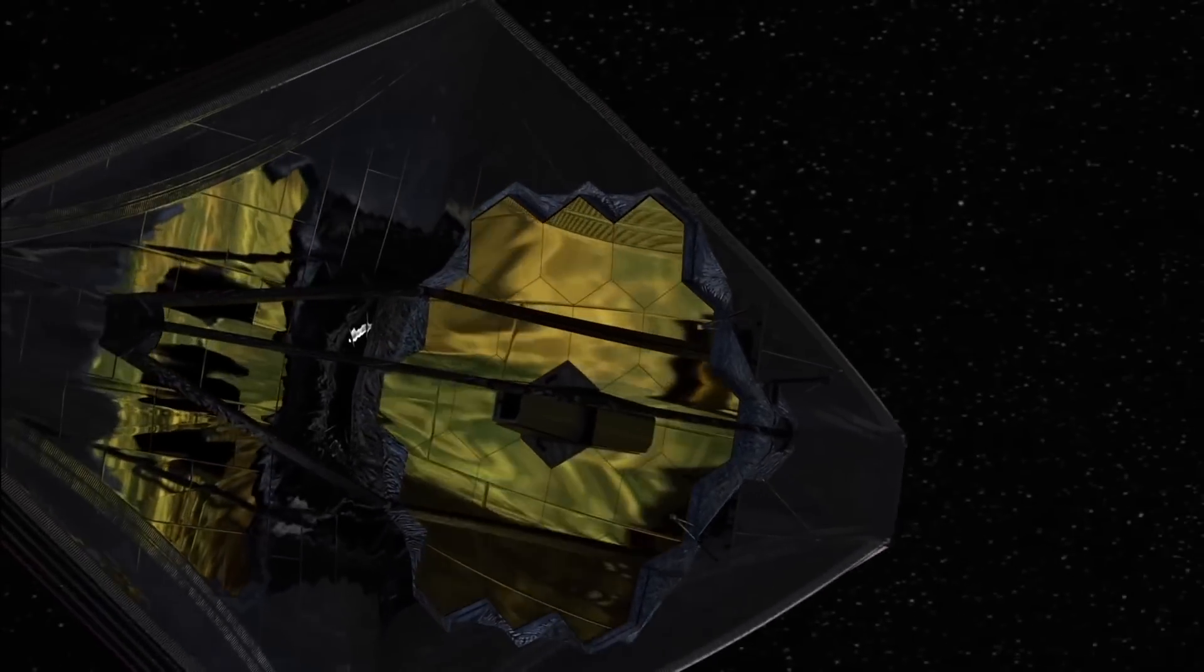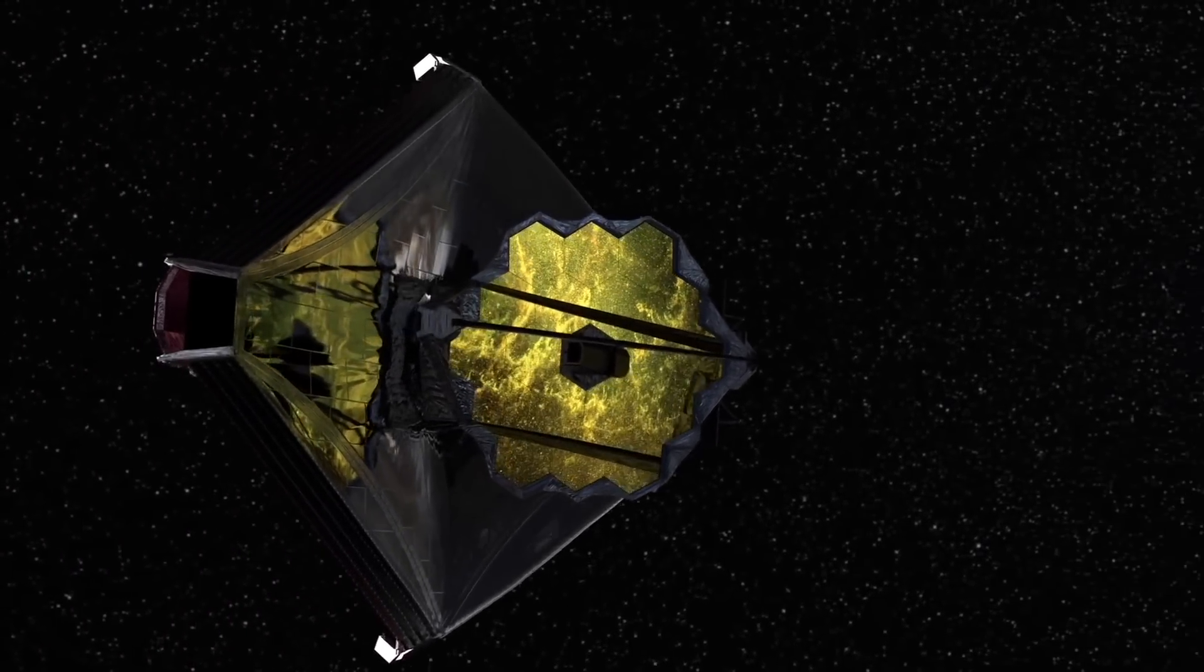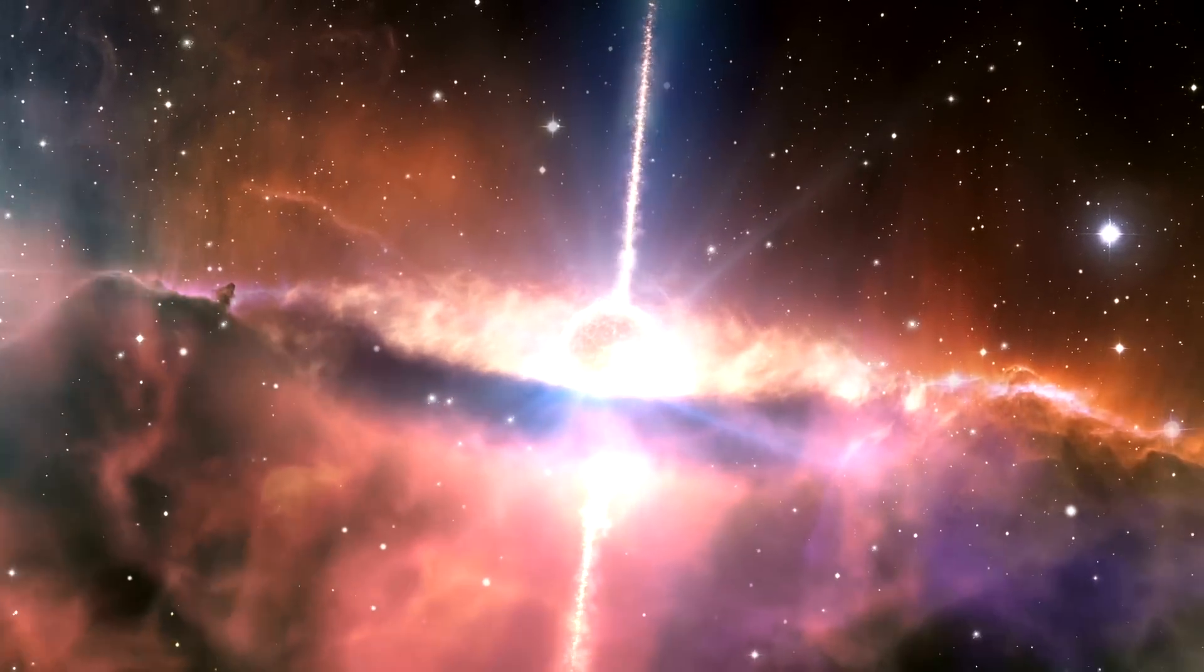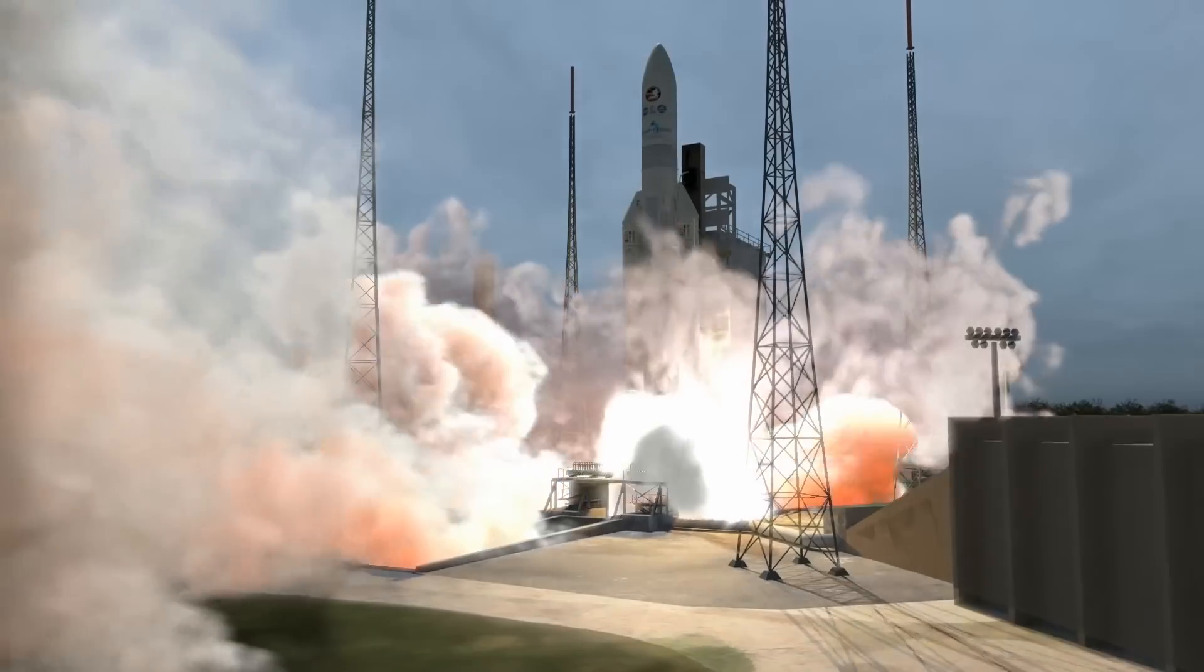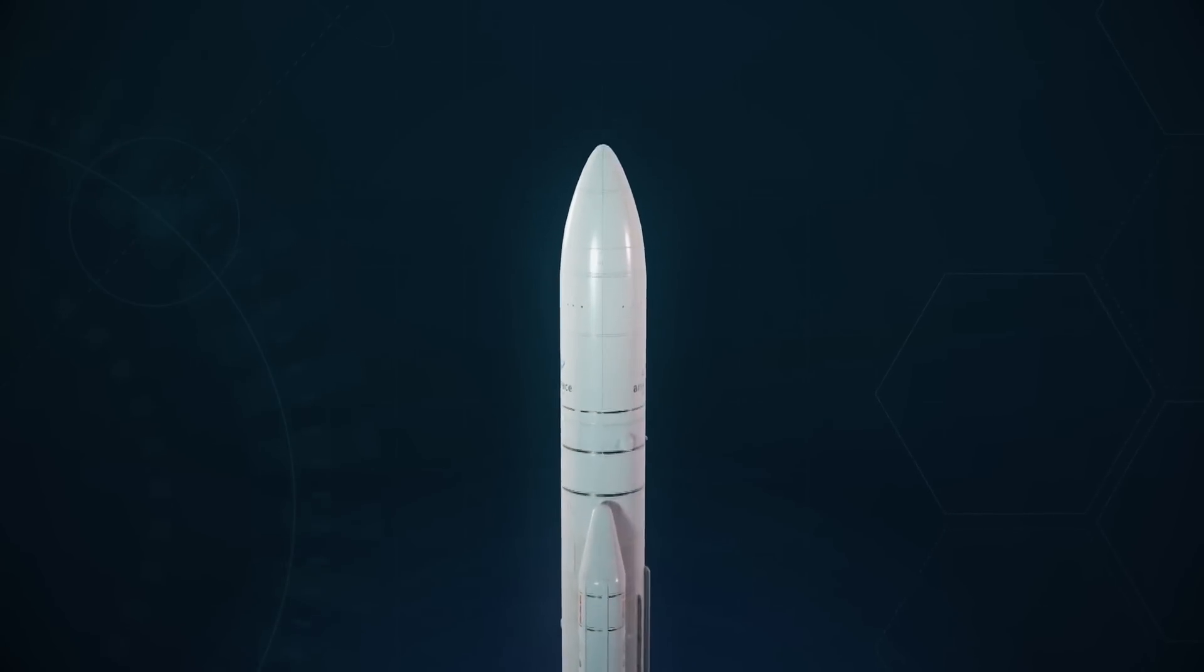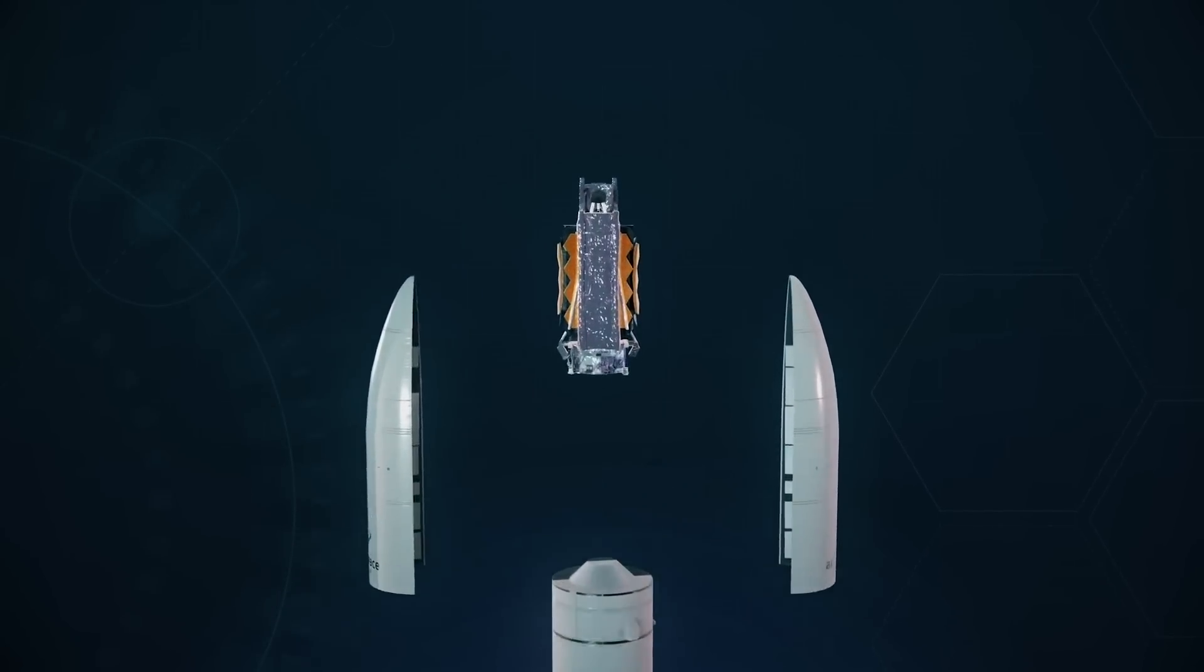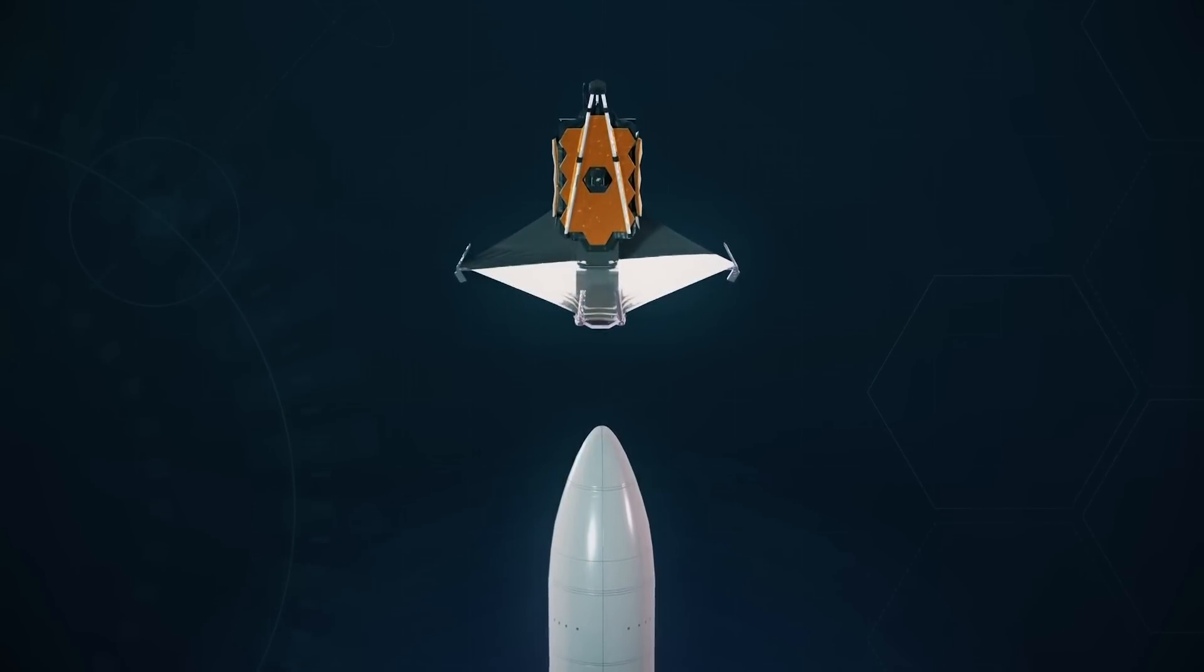There were 344 single-point failures or actions that needed to become successful for the mission to succeed, according to a report produced by an independent review board in 2018. The telescope, however, was successfully launched from the French Guiana Spaceport of the European Space Agency by being hidden within the nose cone of an Ariane 5 rocket. It went live in December 2021.